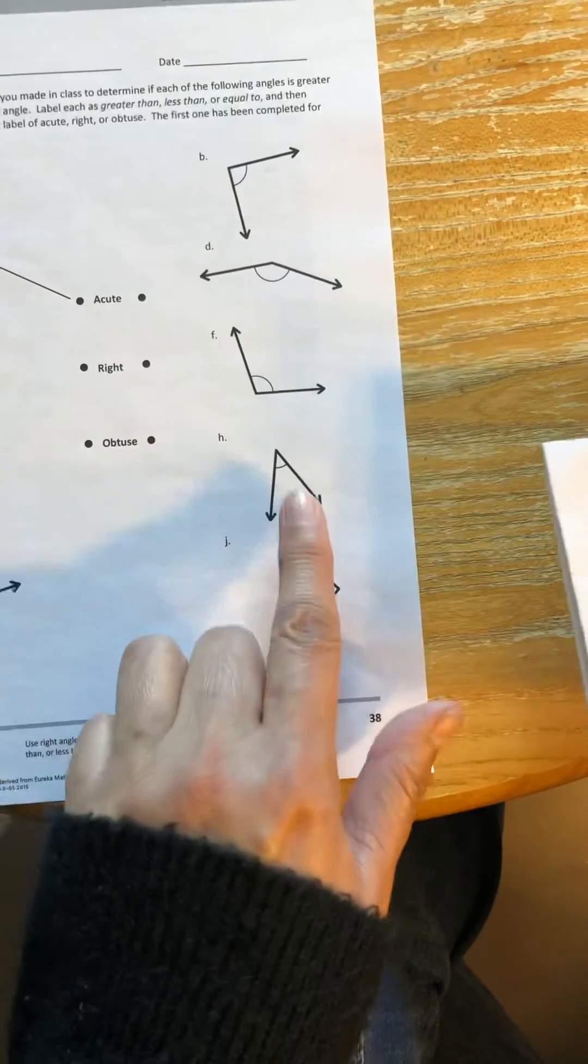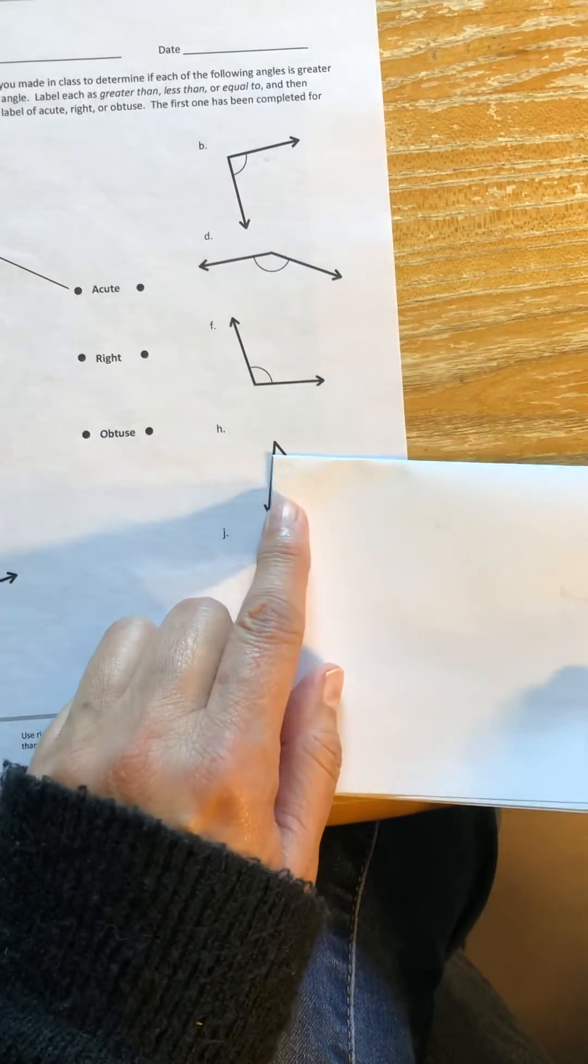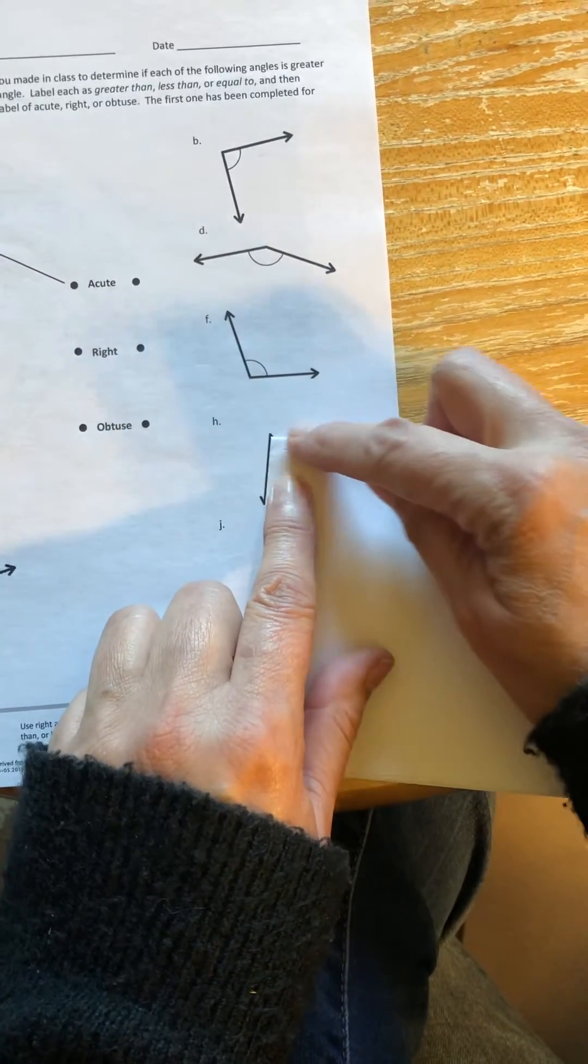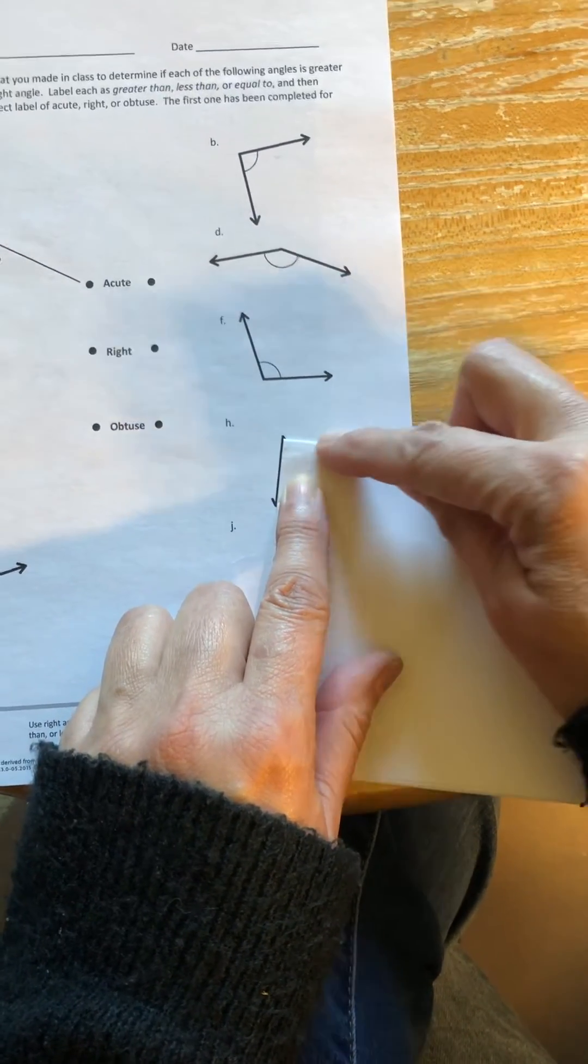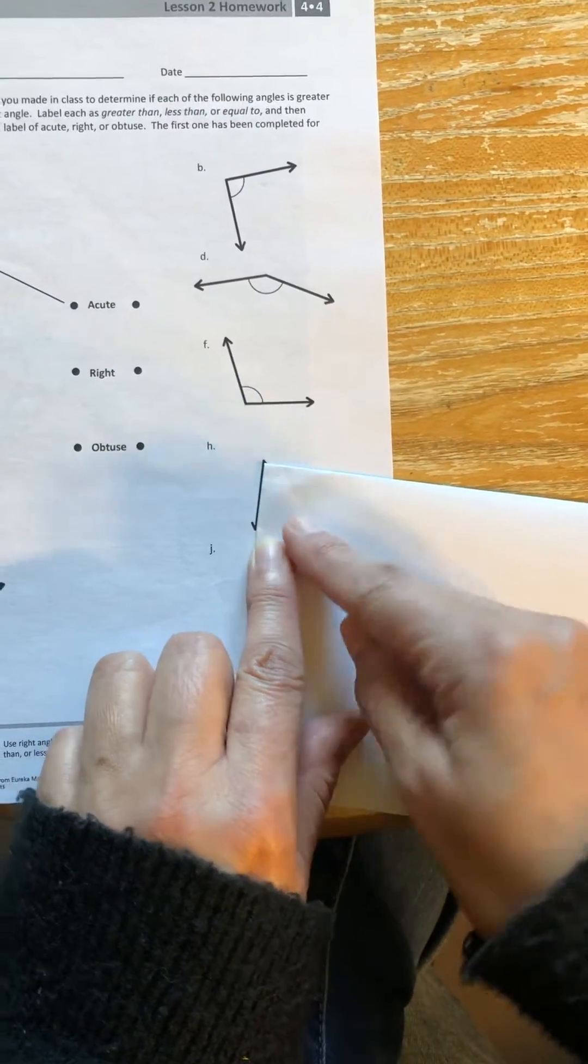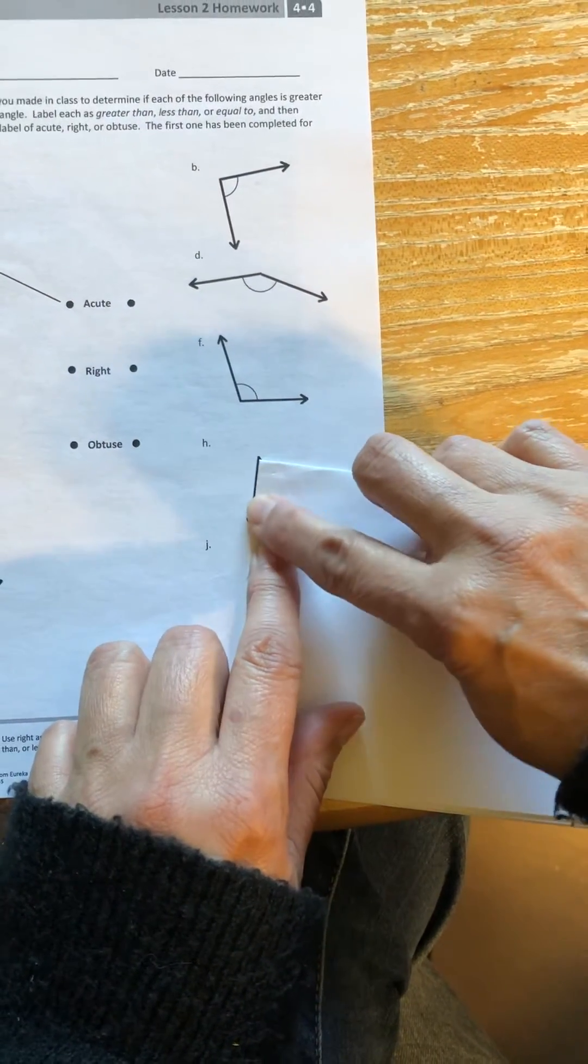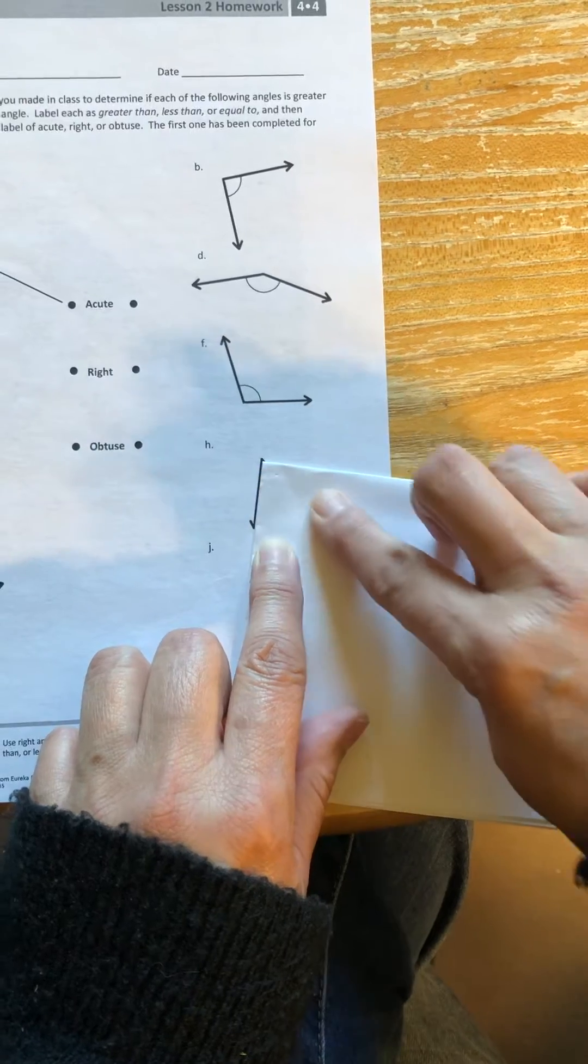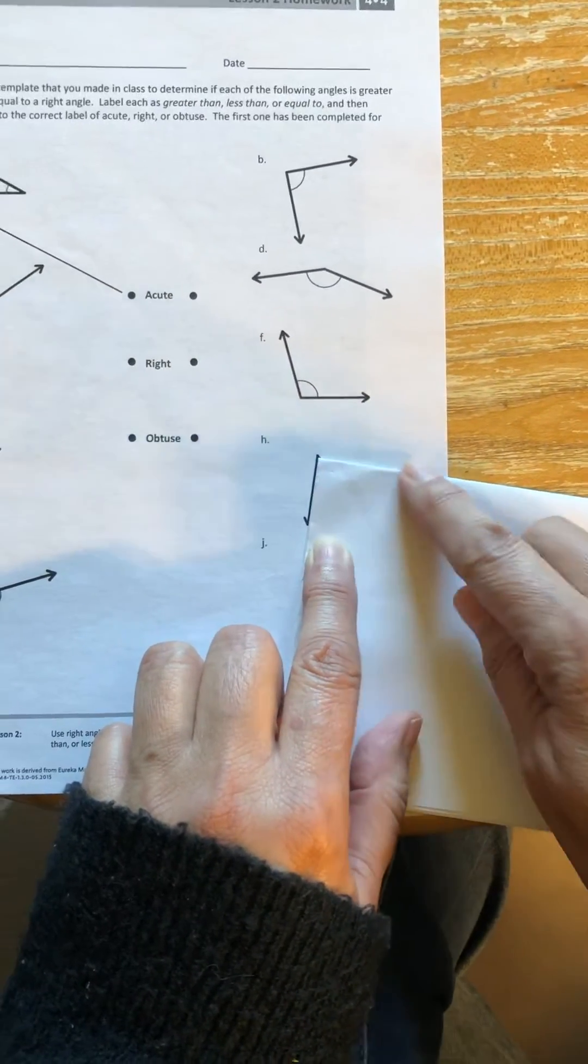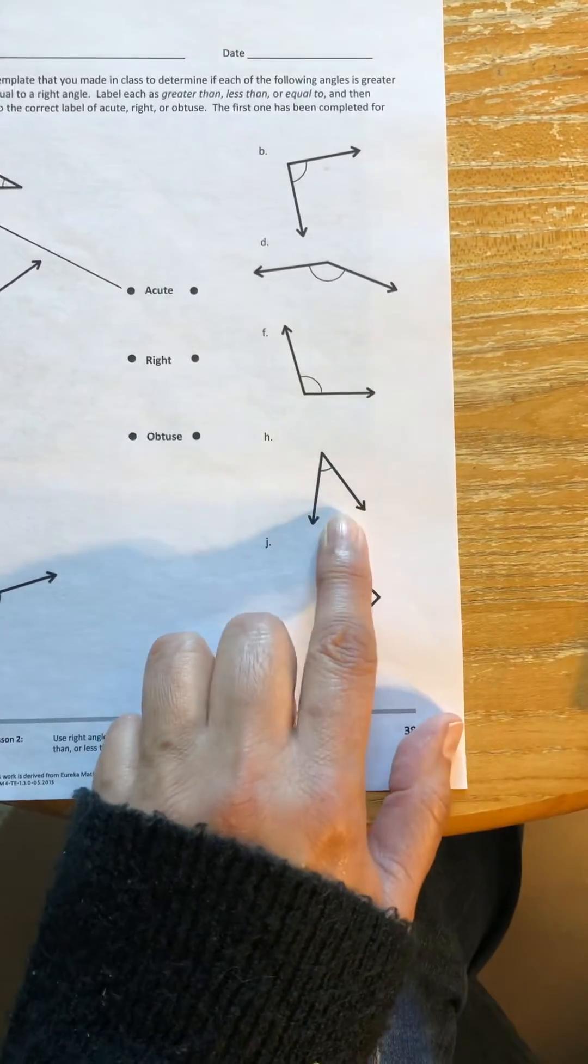However, if I have an angle like this and I line one side up, you notice that the other side is not visible because it's inside the template here. So if I can only line up one side of the angle and cannot see the other side, then it is an acute angle.